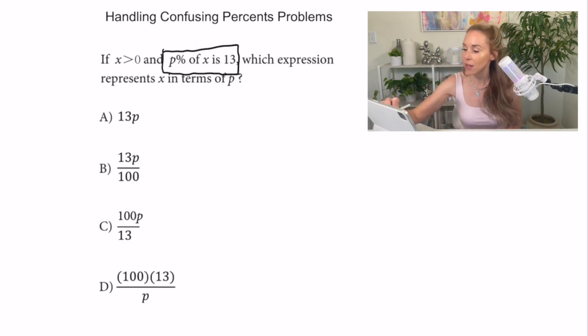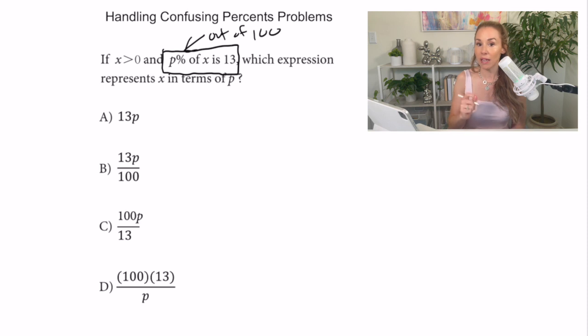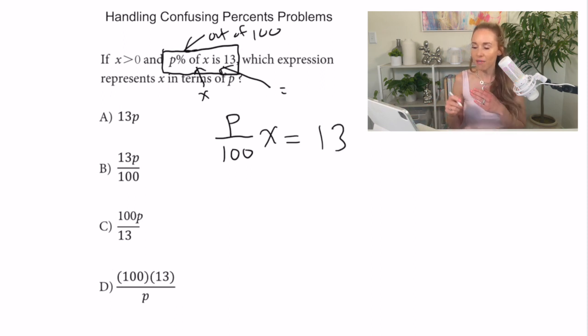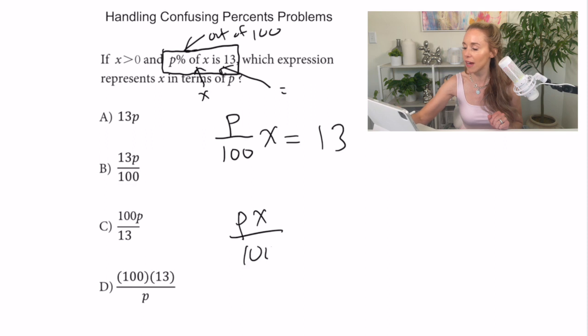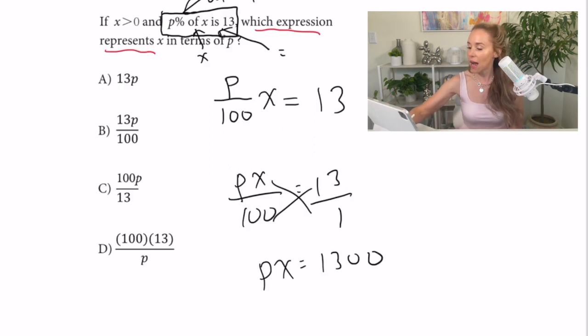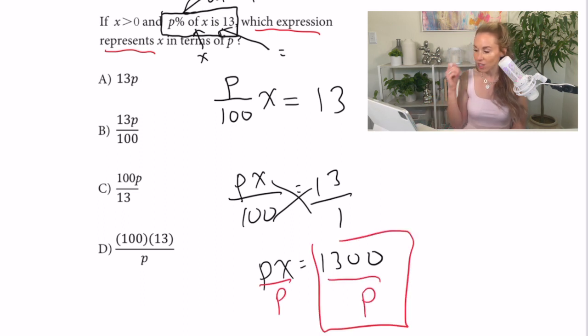Now percent, you guys means out of 100. So when I want to write p percent, I'm going to write it like this. It's p per 100. Now of means multiply. So I'm going to multiply it by x. So p percent of x equals 13. Now rule of thumb, when you have a negative symbol or a variable next to the fraction, put it up in the numerator. So let me just rewrite it to make it easier. I'm going to put that x up with the p. And then what I'm going to do is I'll cross multiply. So I have px equals 1300. Now I'm solving for x because it says which expression represents x. So I want x all by itself. I'm going to divide by p. So here's my answer. Which one gets me that? Well, 100 times 13 gets me the 1300 that I need on top. And then I'm done.